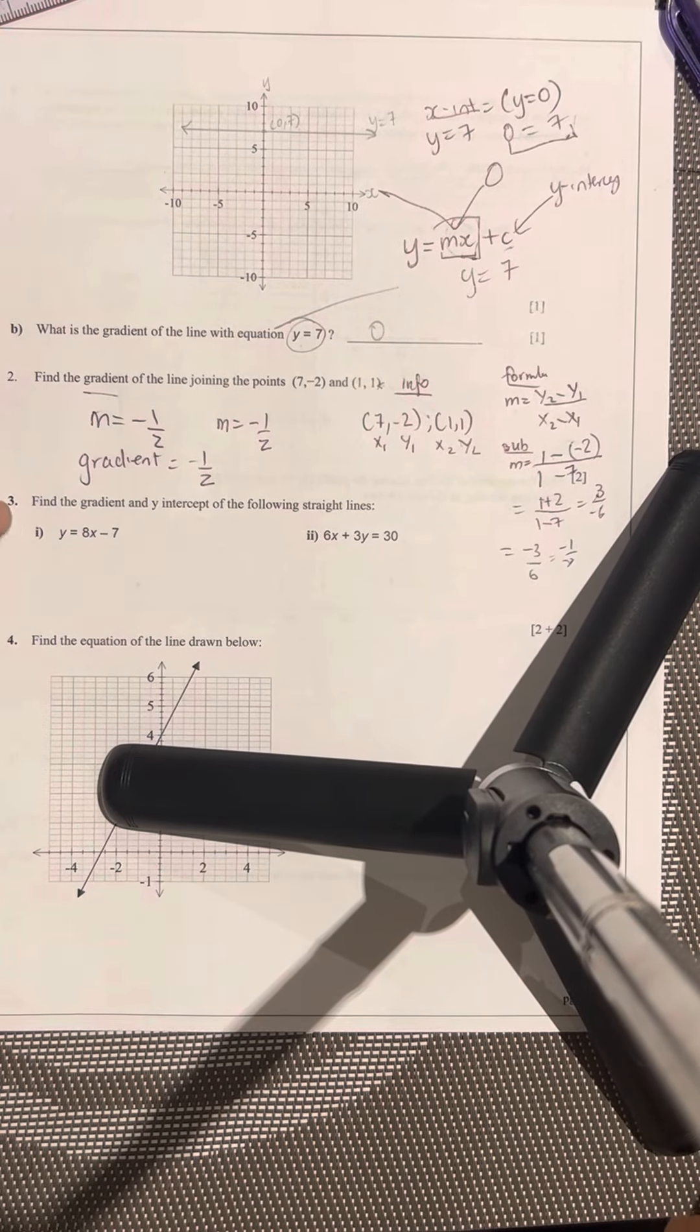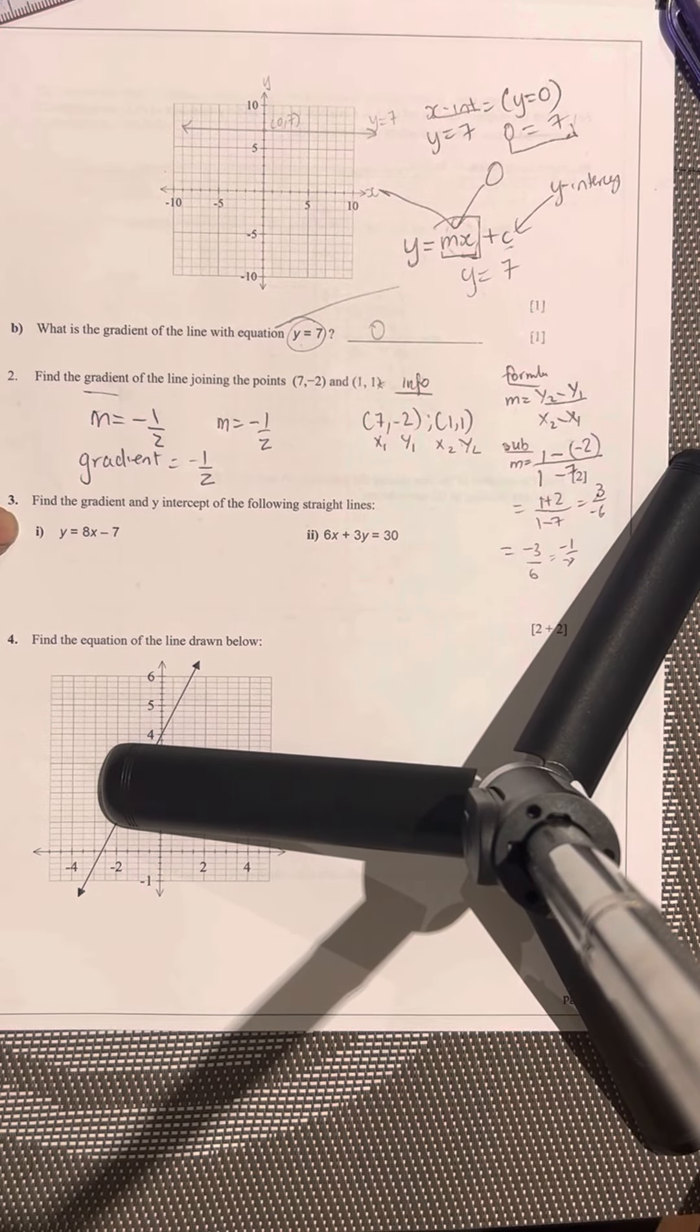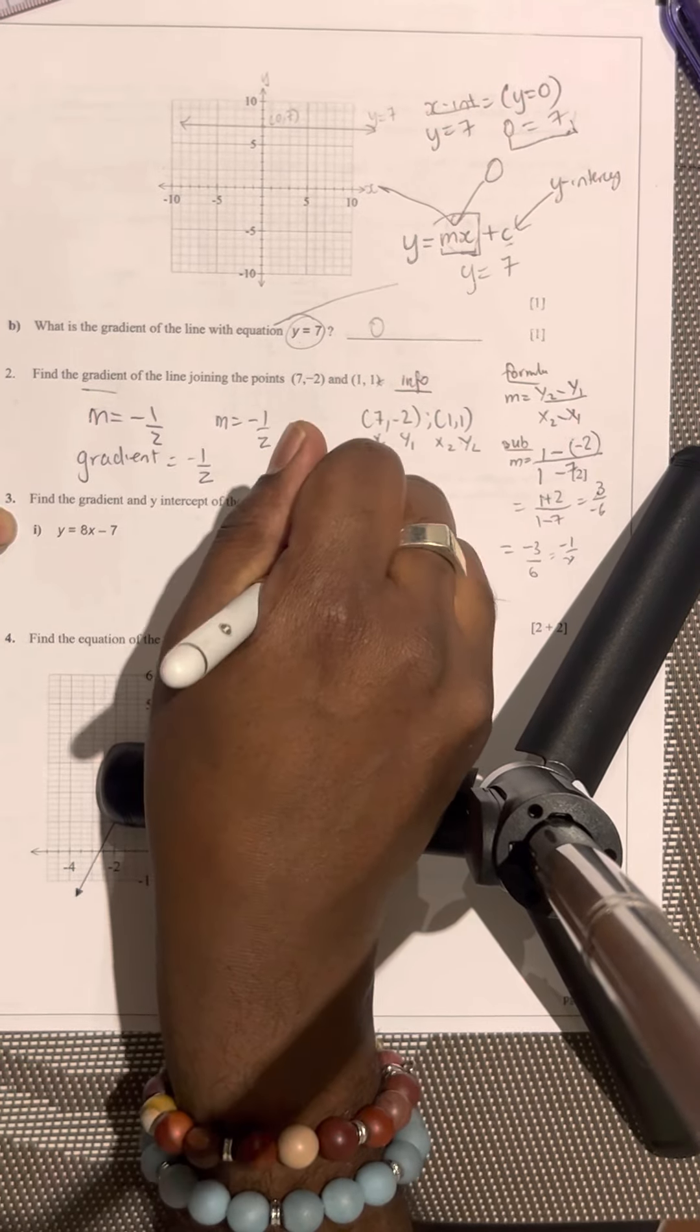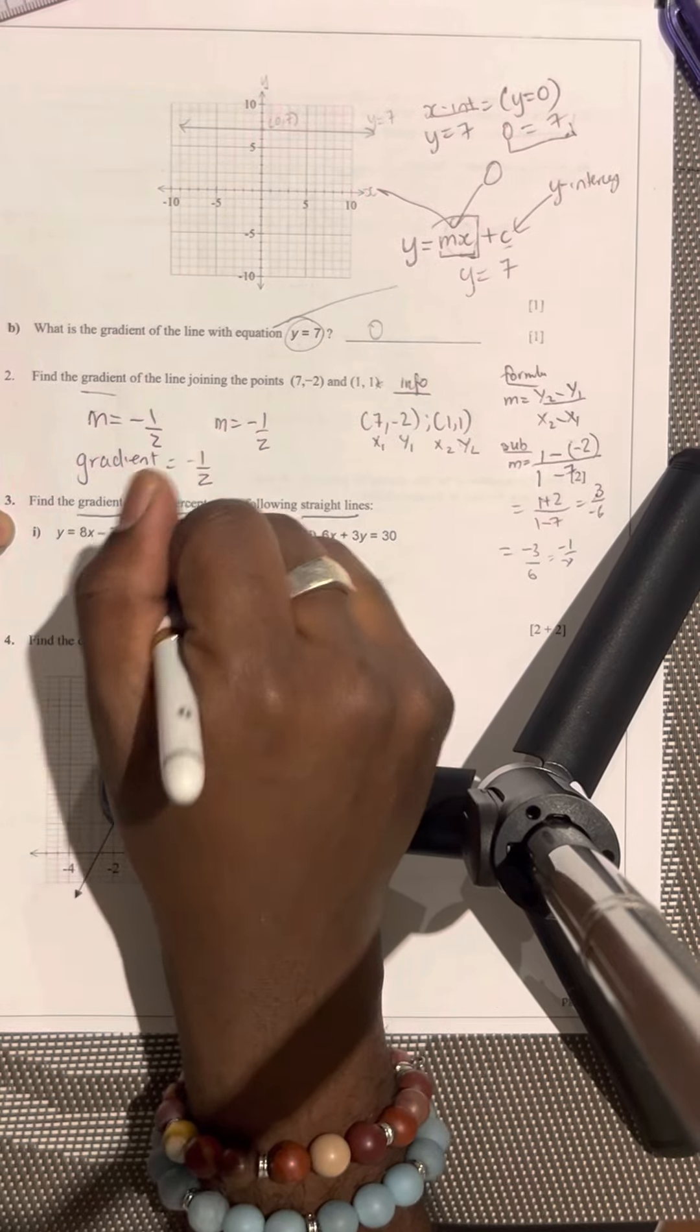Going through question number three, find the gradient and the y-intercept of the following straight lines. So you've got straight lines, and you need to find out the gradient and the y-intercept.